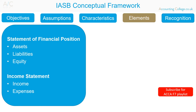The Elements of the Financial Statements: There are five elements to the conceptual framework. Three elements relating to the statement of financial position: Assets, Liabilities and Equity. And two relating to the income statement: Income and Expenses.